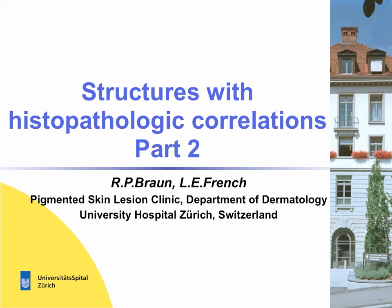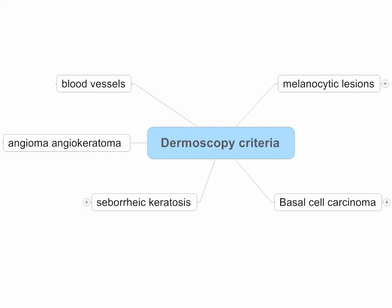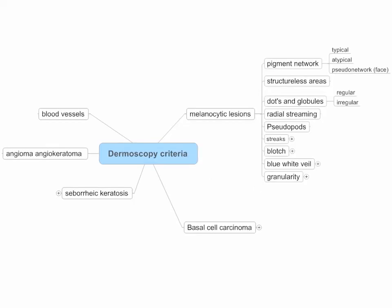Yes, ladies and gentlemen, this is the second part of the educational podcast on structures with histopathologic correlates in dermoscopy. Again, we're going to talk in the first step on the histopathologic correlation of the structures seen in melanocytic lesions. Which structures do we see in melanocytic lesions? These are mainly pigment network, structureless areas, dots and globules, radial streaming, pseudopods, streaks, blotches, blue-white veil, and granularity. Let's go through these criteria.